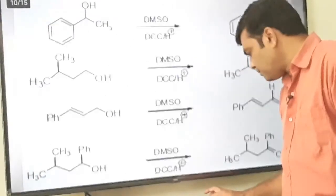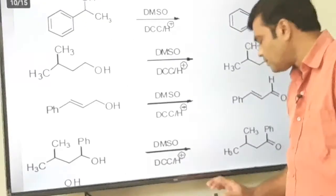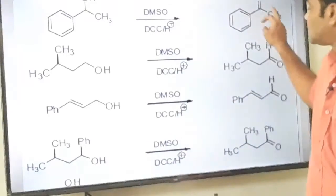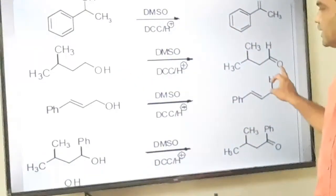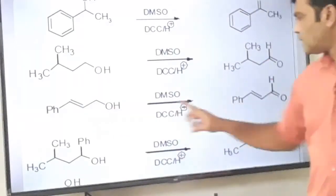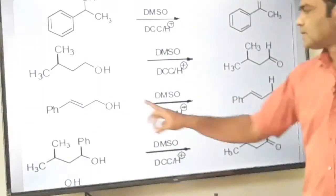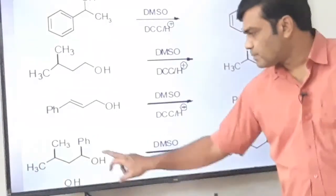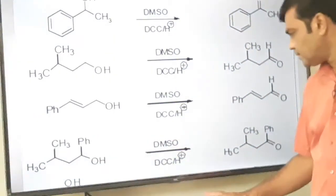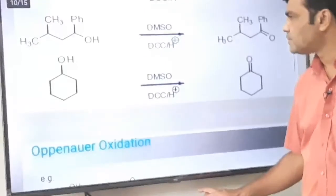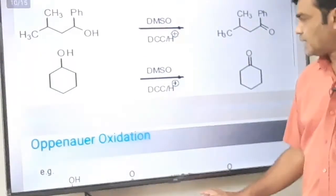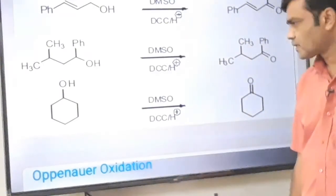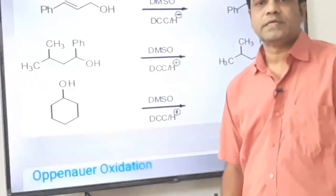These are the examples of Pfitzner-Moffatt oxidation. Secondary alcohol is oxidized to ketone, primary alcohol is oxidized to aldehyde, and the carbon-carbon double bond is not affected. Primary alcohol is oxidized to aldehyde only with this combination of DMSO and DCC. Secondary alcohol is also oxidized to ketone.